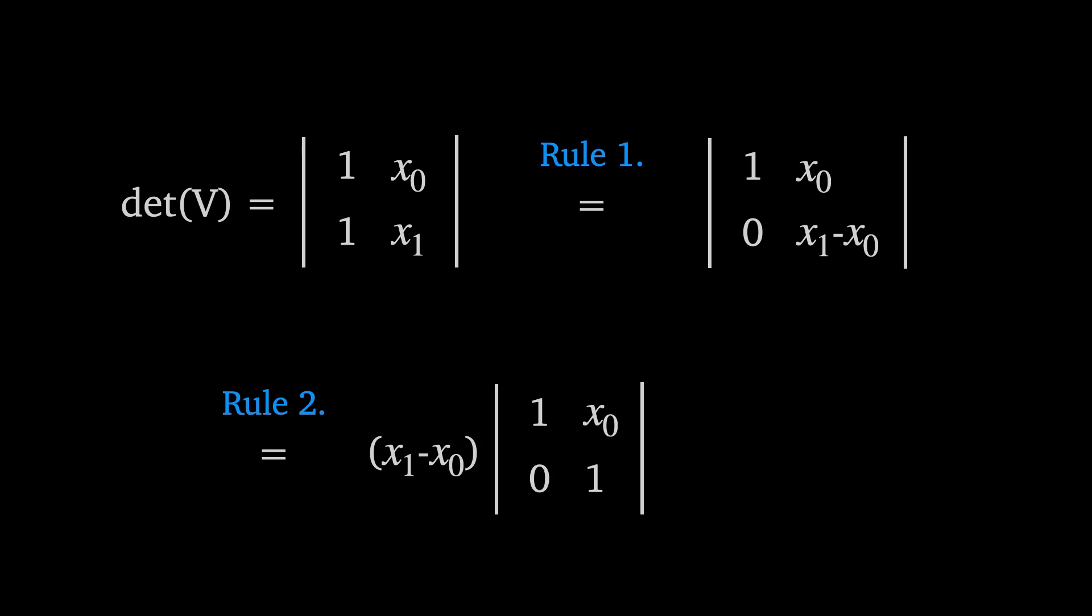In summary we used rule 1 in order to subtract row 1 from row 2 and rule 2 to pull out the factor x sub 1 minus x sub 0. This might feel like a very long-winded way of doing things but proving the general case for the Vandermonde determinant essentially takes this form.